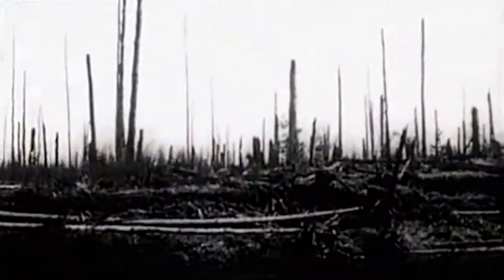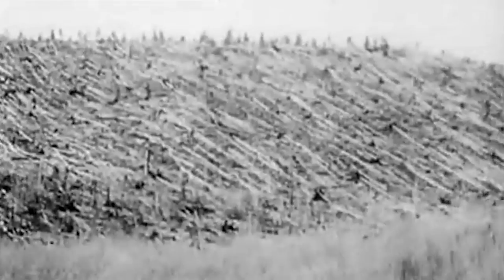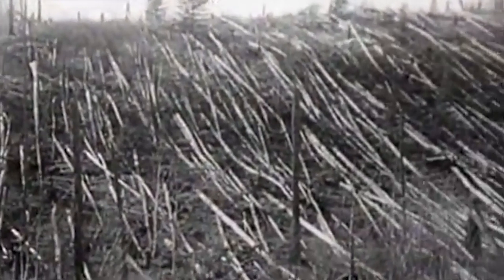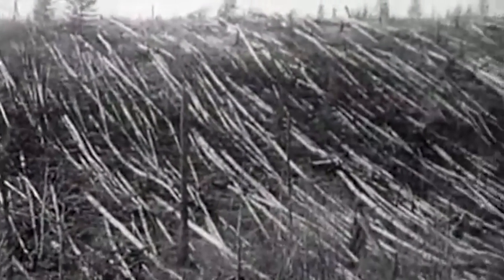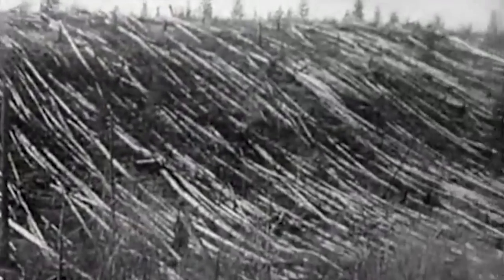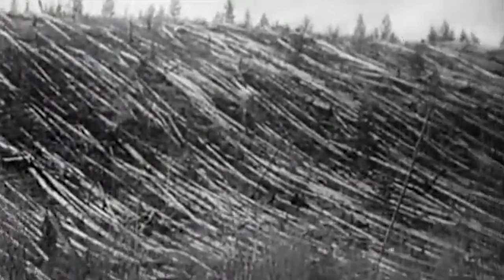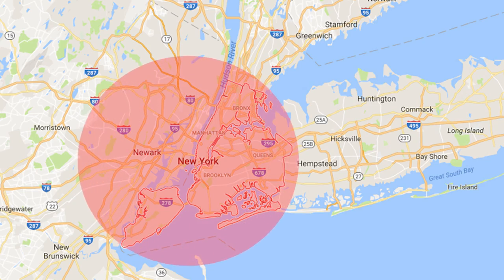In 1908 it's believed that either a comet fragment about 170 meters across or an asteroid of about 50 meters across exploded between 15 and 30,000 feet above a sparsely populated area of Siberia near the Tunguska River with a force of between 10 and 15 megatons of TNT. That's about 1000 times that of the Hiroshima bomb. That was enough to flatten 80 million trees over an area twice the size of New York City.